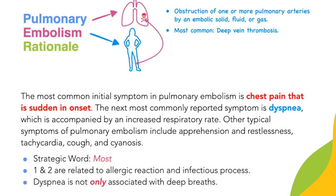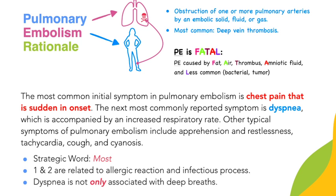We eliminated answer choices one and two because they are probably related to an allergic reaction and an infectious process. Let's include a nice mnemonic so you can remember what can cause a pulmonary embolism: 'PE is fatal' — PE can be caused by Fat, Air, Thrombus (most likely in this case), Amniotic fluid, and Less commonly by Bacterial and tumor growth. Very important to keep that in mind.